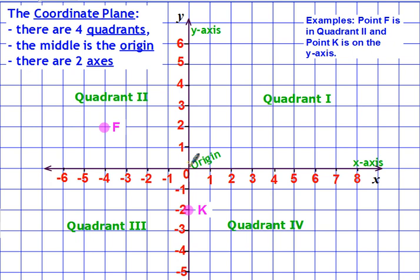Make sure you learn your vocabulary. This is your origin. This is quadrant one, quadrant two, quadrant three, and quadrant four.